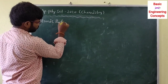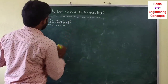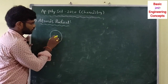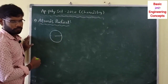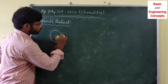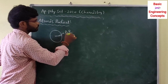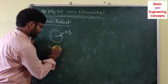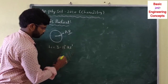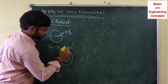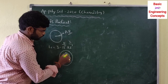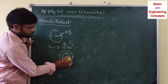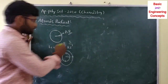Atomic radius means the distance between the center of the nucleus and the outermost shell. For example, lithium has atomic number 3 with configuration 1s² 2s¹. The K shell has two electrons and the L shell has one electron. The distance between the nucleus and the outermost energy level is called atomic radius.